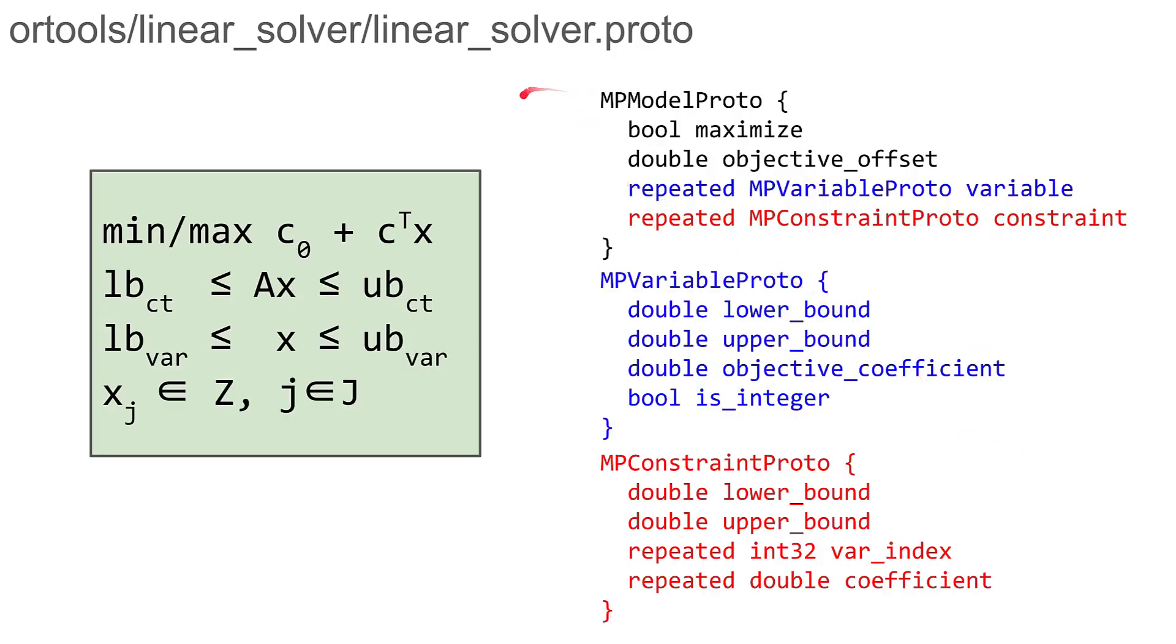So how would you model a MIP inside OR-Tools? On the left hand side you have a mathematical formulation of a MIP. There is an affine objective, minimization or maximization, subject to a set of linear inequalities with some bounds on the variables. For a subset of variables or all variables, you specify which have to be integer. OR-Tools uses protocol buffers or protos, a Google technology. It's like JSON but with strict type checking and support for multi-languages.